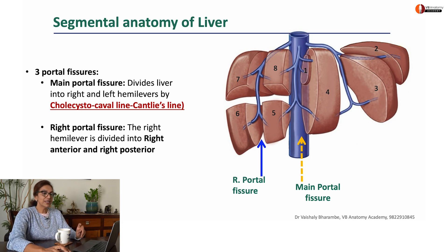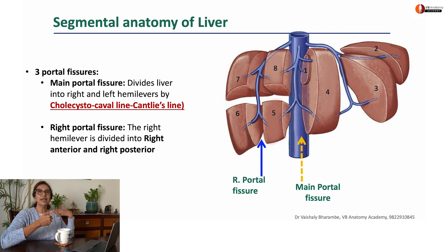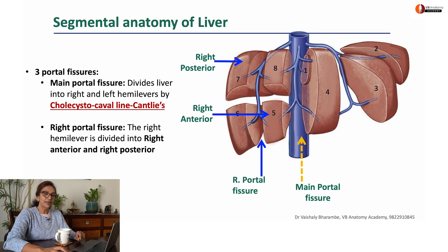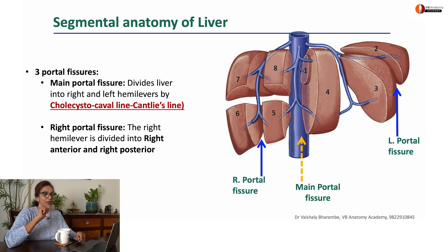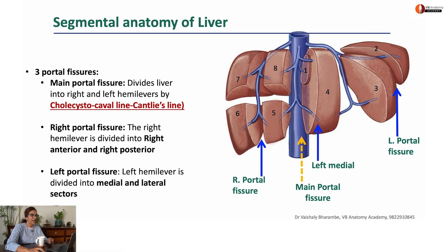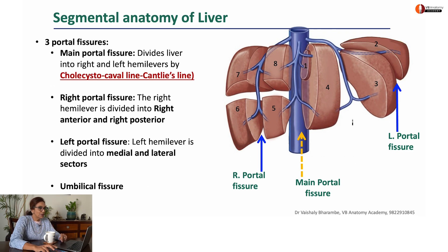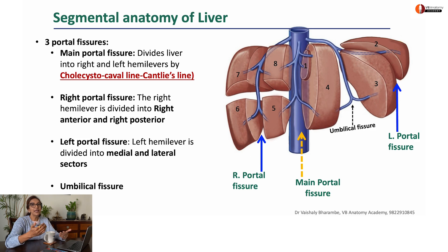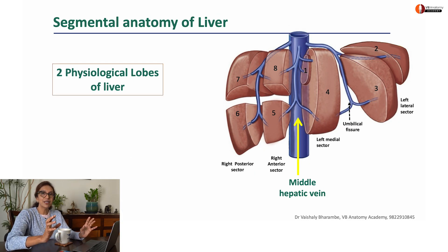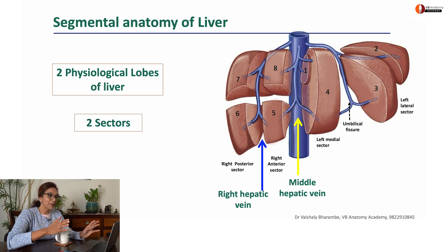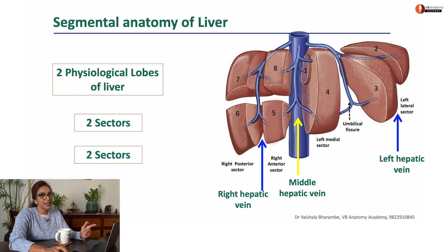The liver is divided into right and left hemi livers. A right portal fissure, represented by the right hepatic vein draining into the inferior vena cava, helps to divide the right hemi liver into right anterior and right posterior. Similarly, a left portal fissure helps to divide your left lobe into left medial and left lateral. There is a difference of opinion on what divides the left lobe — whether it is the umbilical fissure or the left portal vein or left hepatic vein. The umbilical fissure is where the left umbilical vein was entering into the liver, finally remaining behind as the ligamentum teres hepatis.